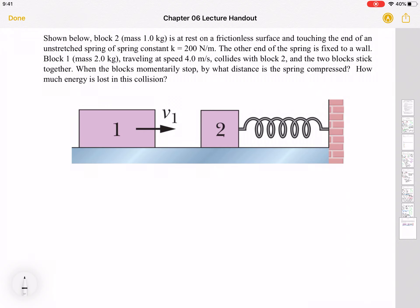Here's an interesting example of two problems or two types of problems kind of dovetailing into each other. So let's read it. Shown below, block 2 is at rest on a frictionless surface and it's touching the end of an unstretched spring with some spring constant. The other end is fixed to a wall. Block 1 travels at some speed, collides with block 2, they stick together, and then they compress the spring until they come to rest. The spring would push them back and they would leave together, presumably. So the question is, how far is this spring compressed?